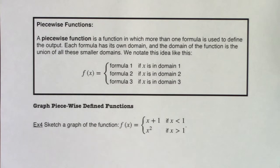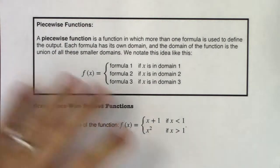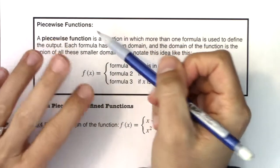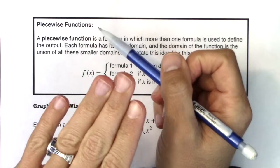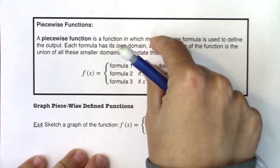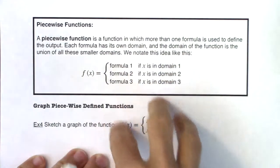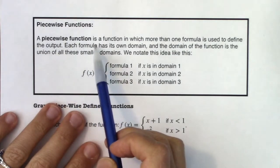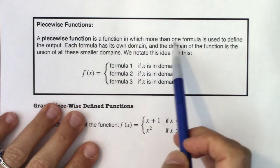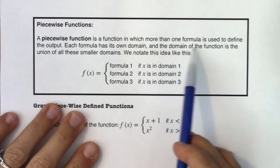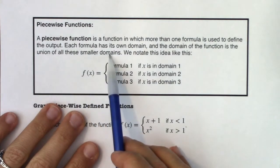Hey Math 31, let's take a look at how we begin to graph piecewise functions. Before I get into the formal definition, a piecewise function is like saying we're going to take a part of this graph and combo it with a part of that graph and maybe combo it with a few more graphs. The formal definition: a piecewise function is a function in which more than one formula is used to define the output. Each formula has its own domain, and the domain of the function is the union of all of these smaller domains.